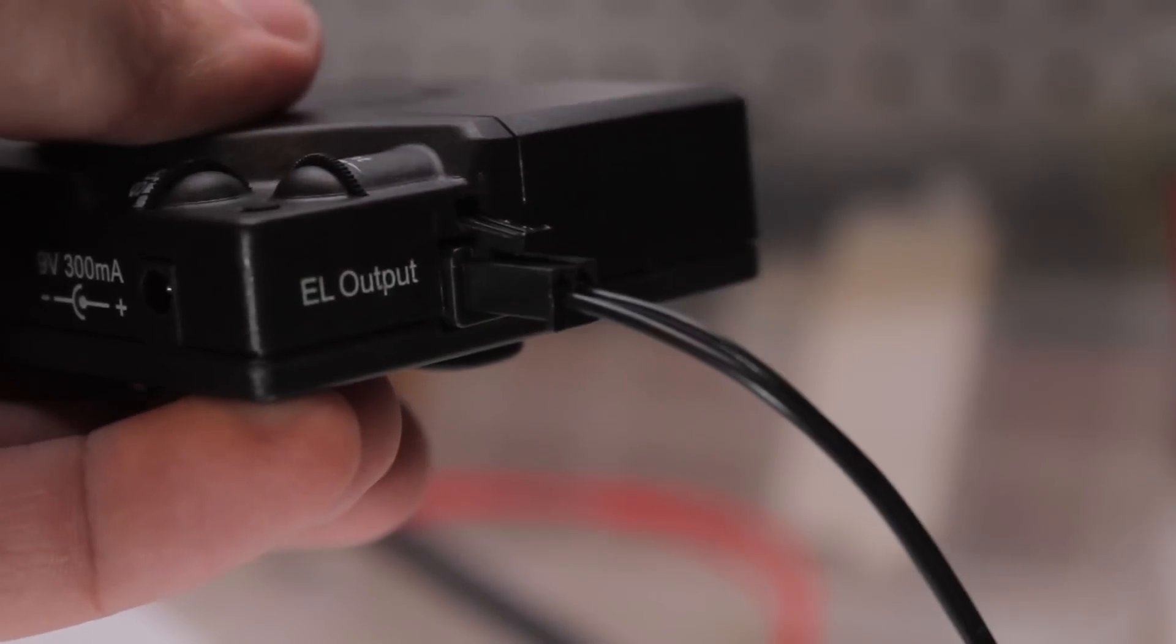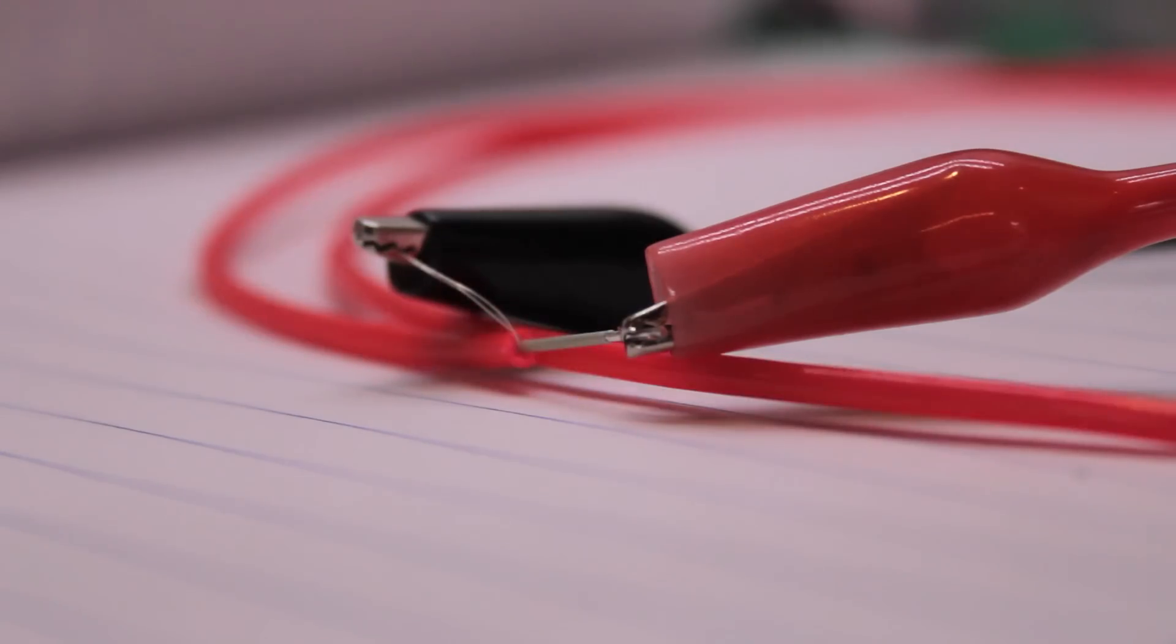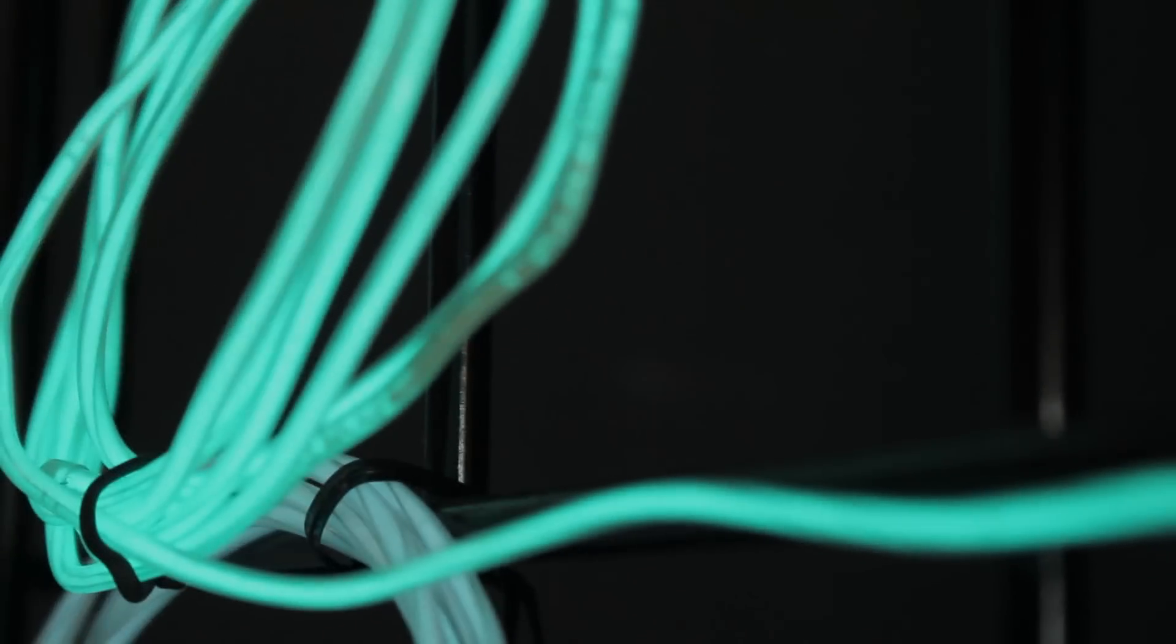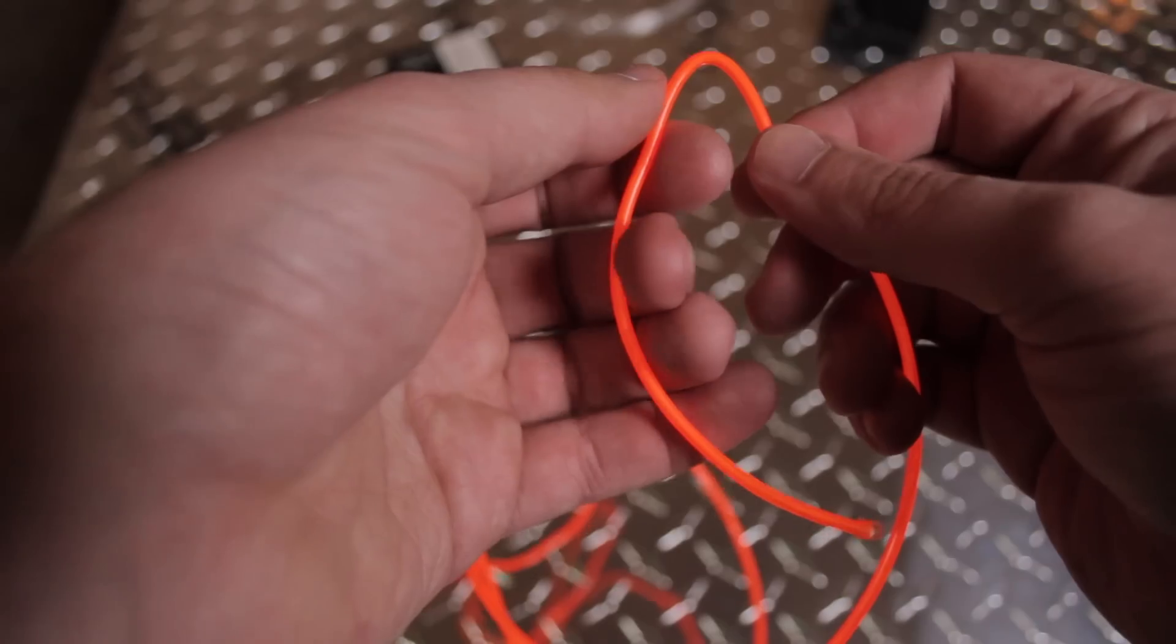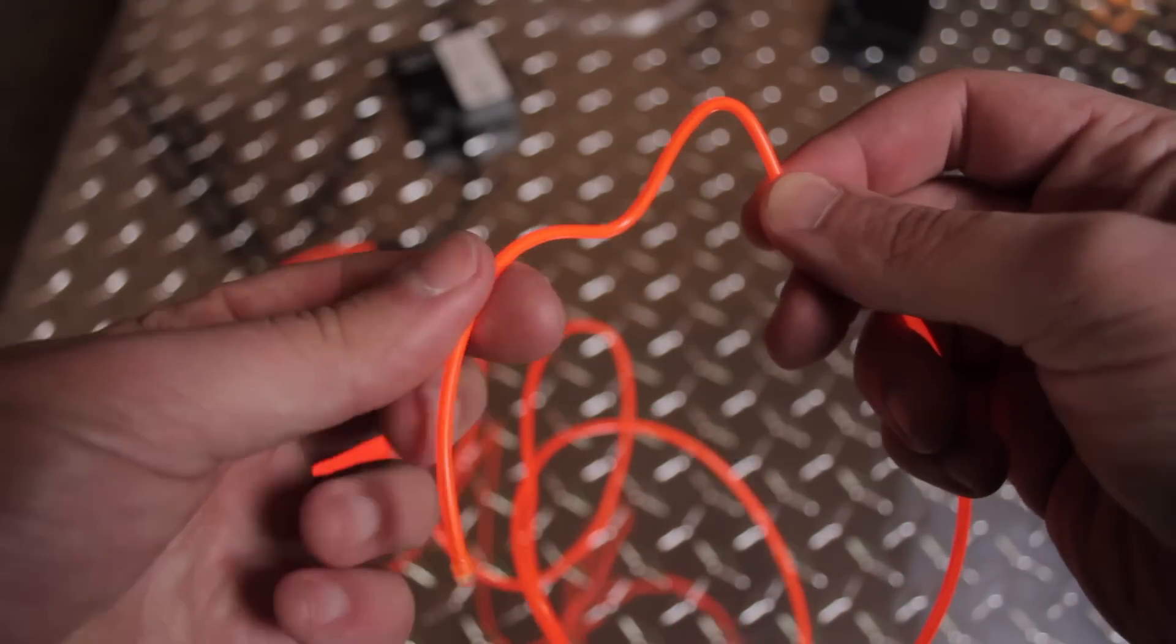When high voltage AC power is applied to the copper wires, the phosphor coating emits light. Some disadvantages of EL wire are that it can be damaged if stressed at any bending point. It holds its shape when bent due to the copper core wire, and its brightness diminishes over time.